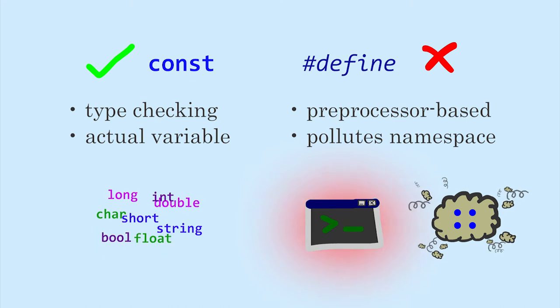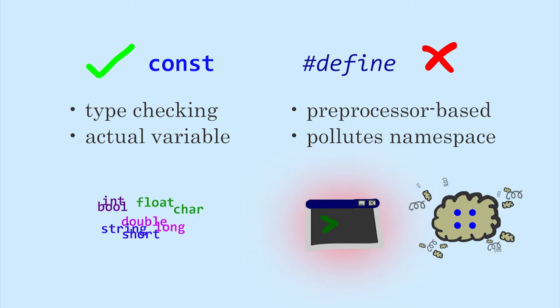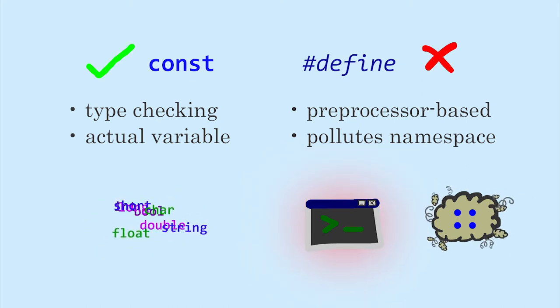On the other hand, const variables are real variables, and come with all the benefits of being ones, including type checking. So remember,